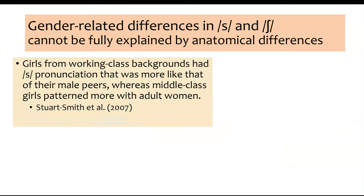Another study looked at speech patterns in Glaswegian English with talkers from different backgrounds — boys, girls, men, and women — split by socioeconomic status. Girls from working-class backgrounds would map their S pronunciation in a way similar to their male peers, meaning they sounded more like boys. But among the middle-class group, girls patterned less like boys and more like women. There was a social difference in how gender was expressed through speech depending on what social circle you were in.